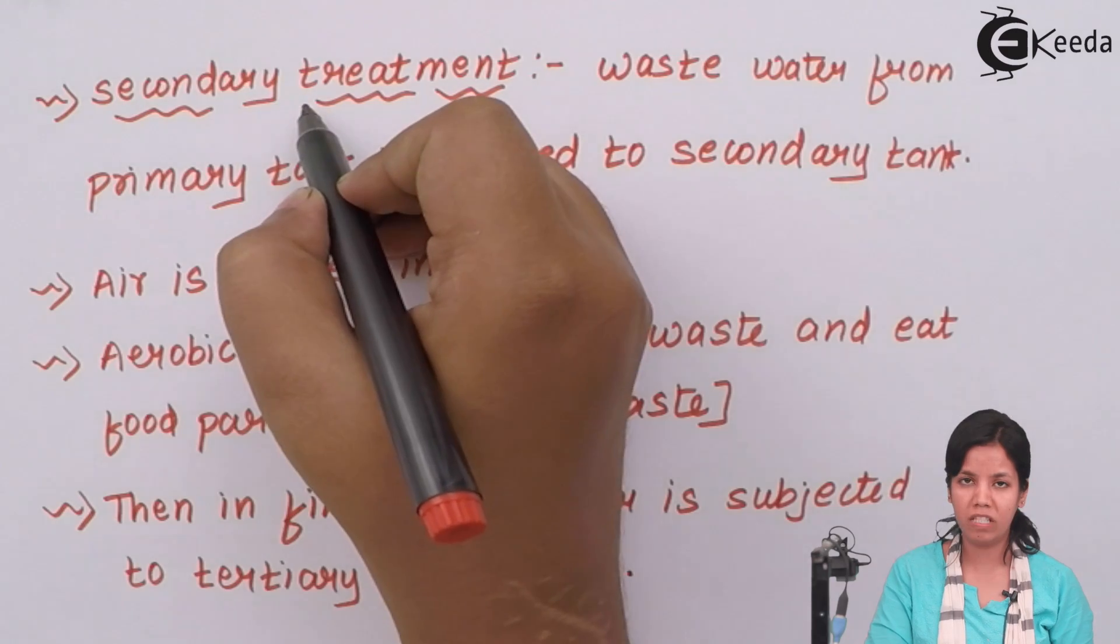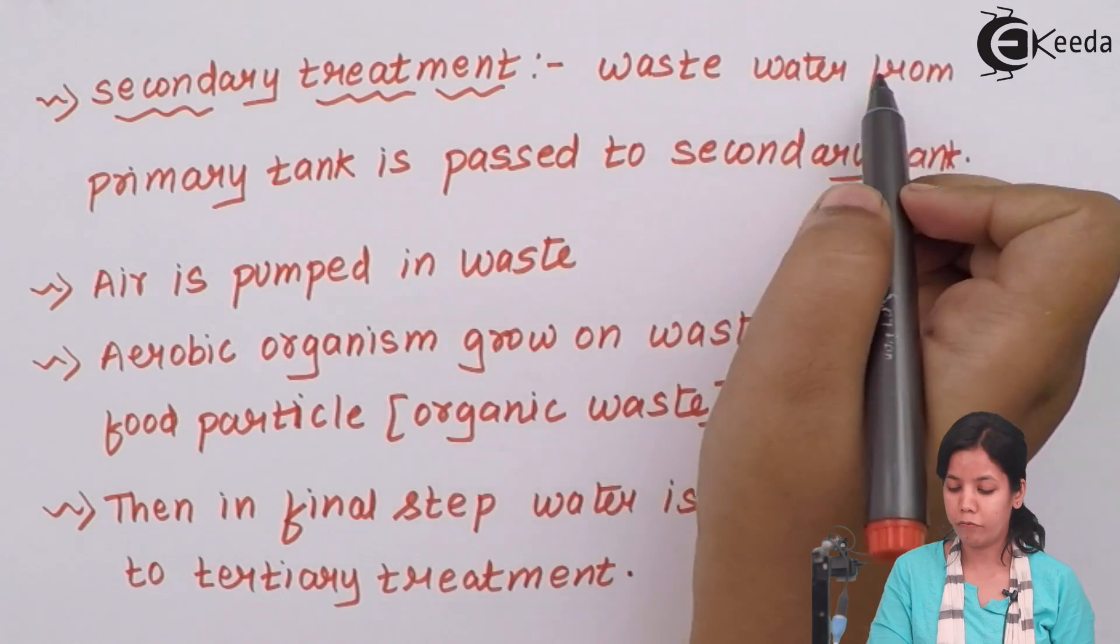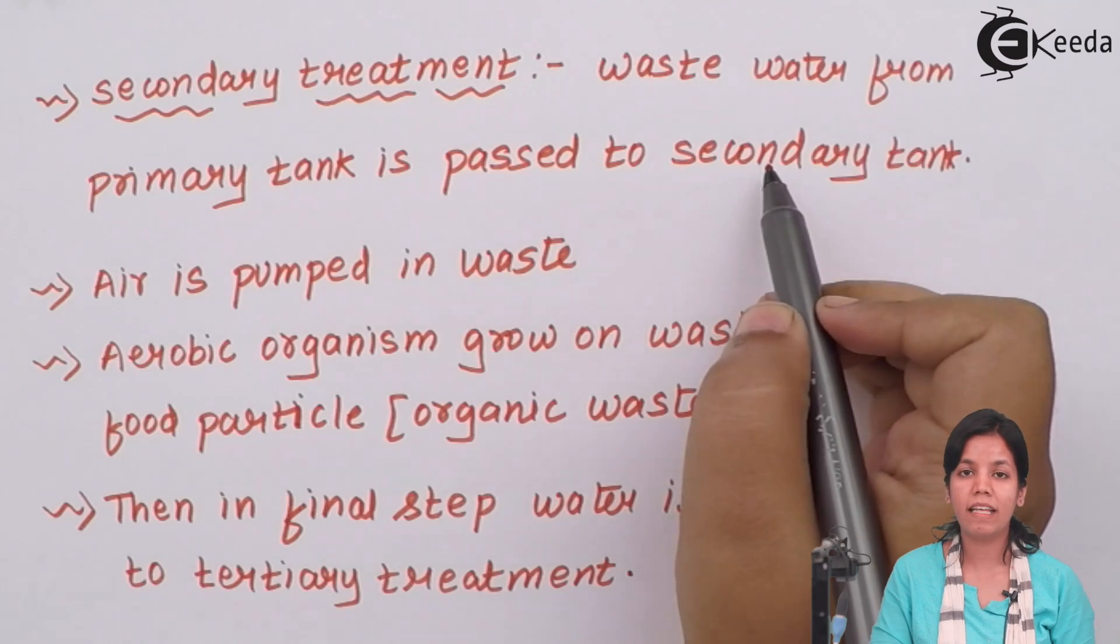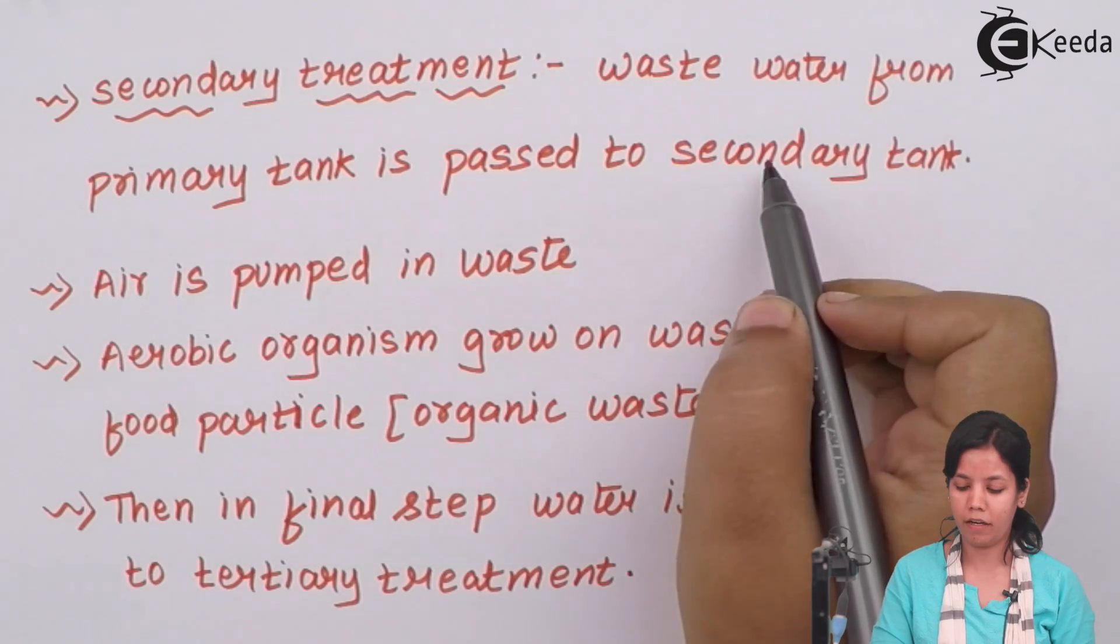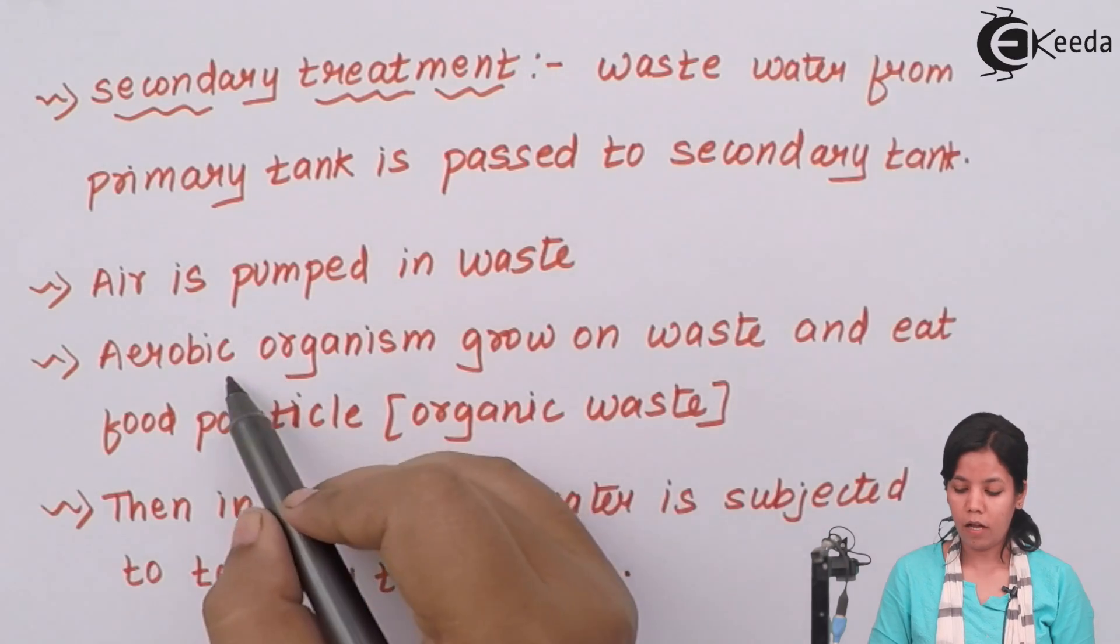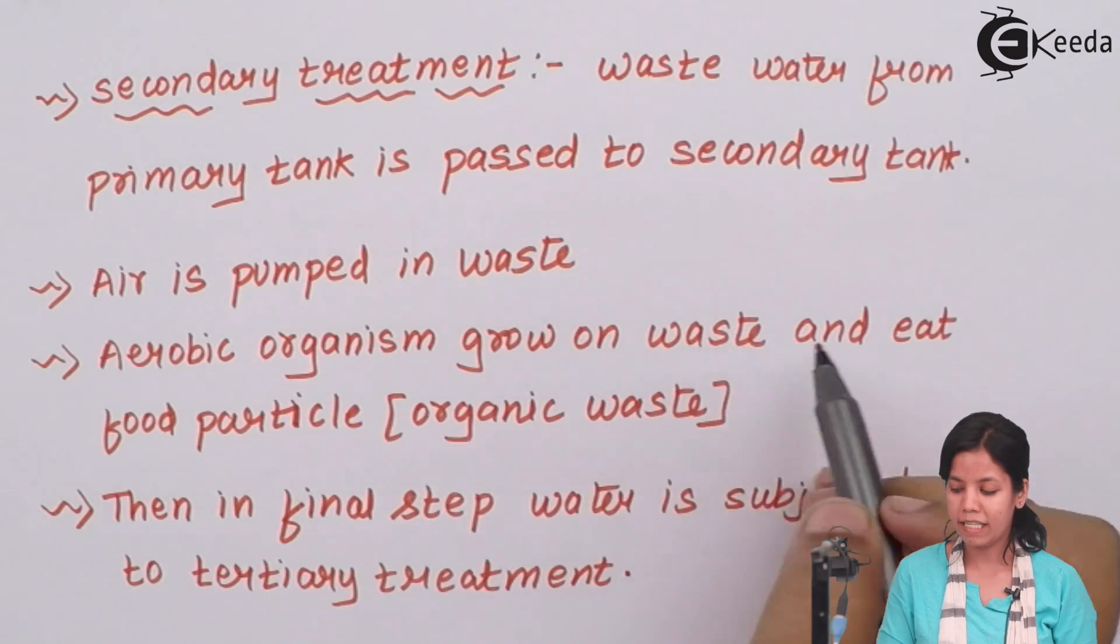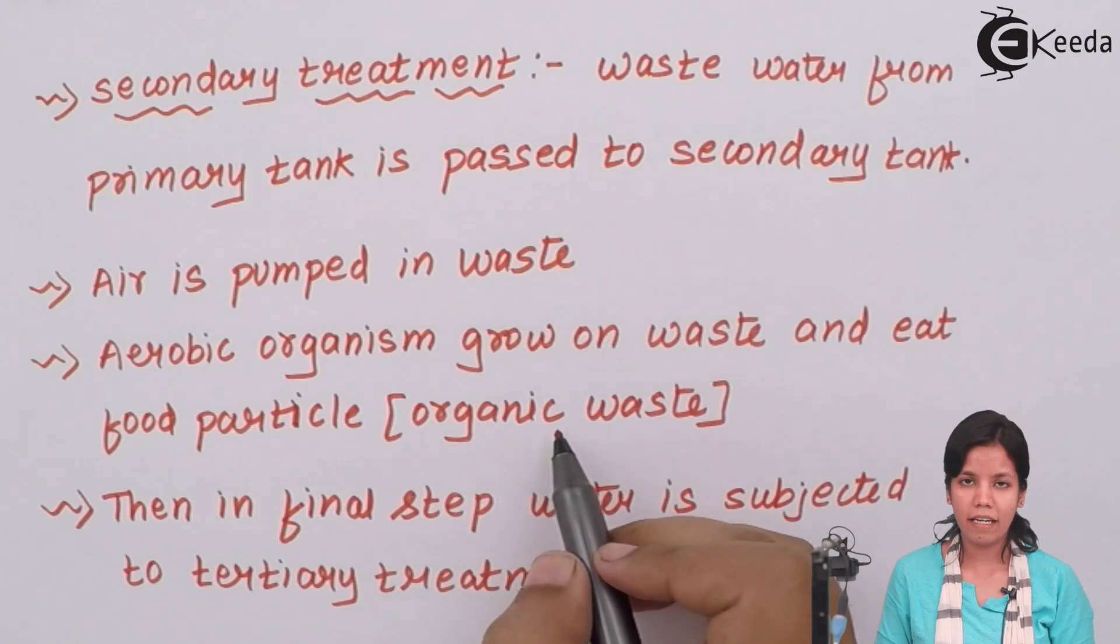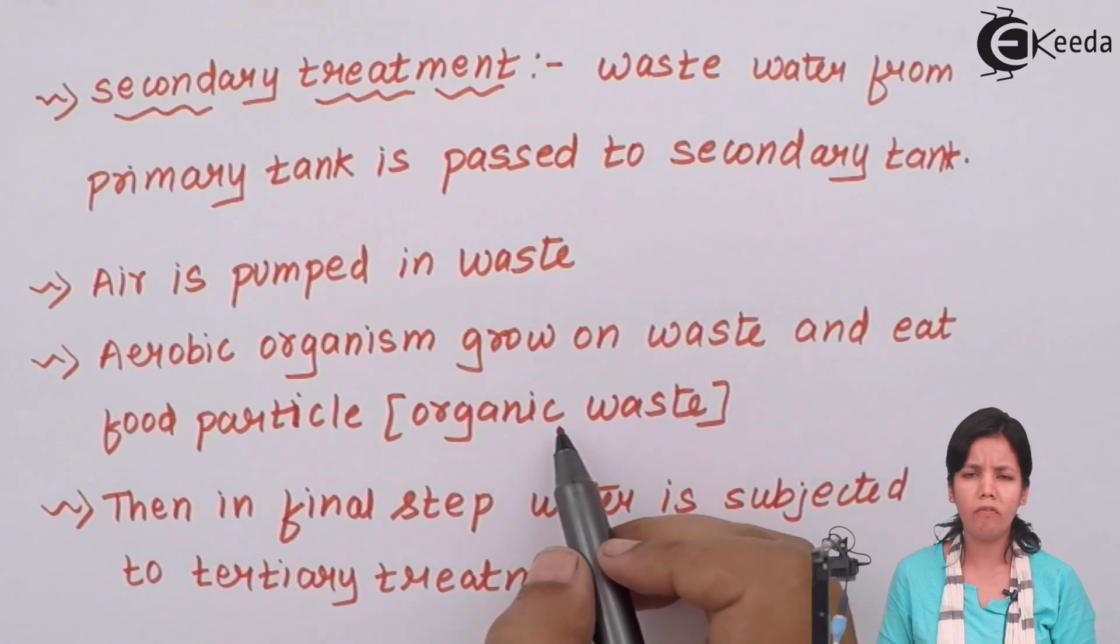Secondary treatment of sewage: wastewater from the primary tank is passed into the secondary tank. Basically, the effluent is passed into the secondary tank. Air is pumped into the wastewater.